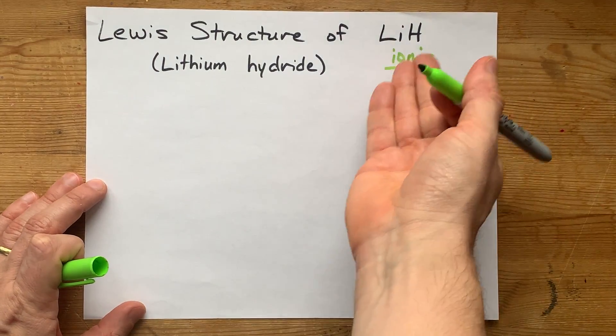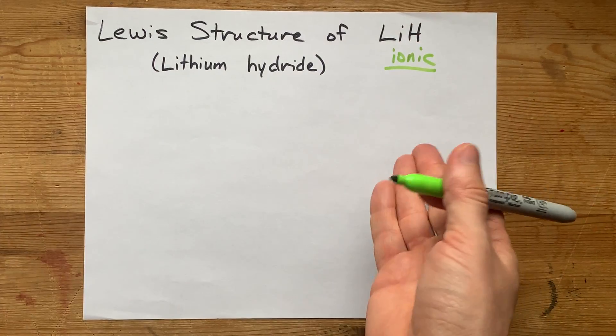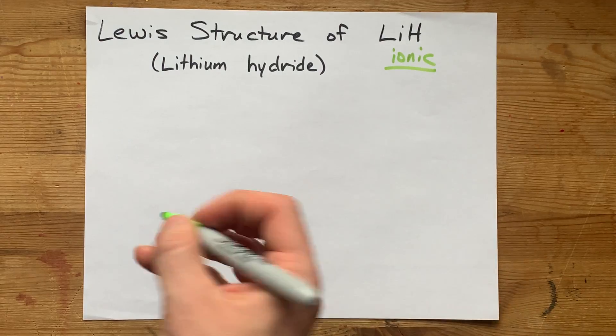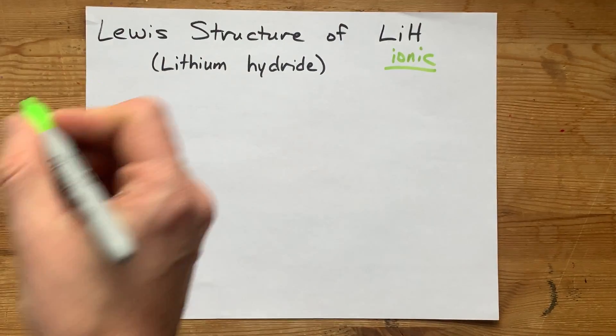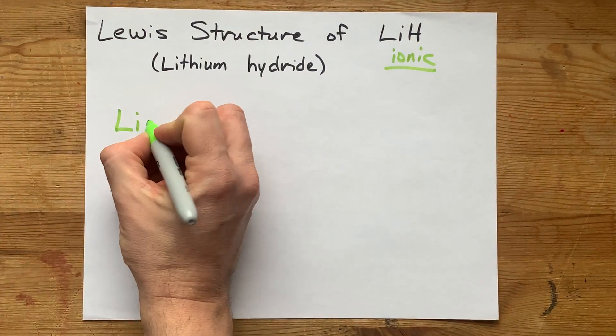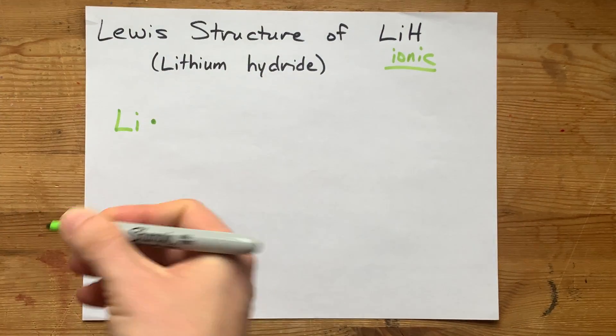I want you to always consider hydrides to be ionic. Now, lithium wants to lose an electron. In fact, because lithium is in the first column of the periodic table, it brings one valence electron with it.